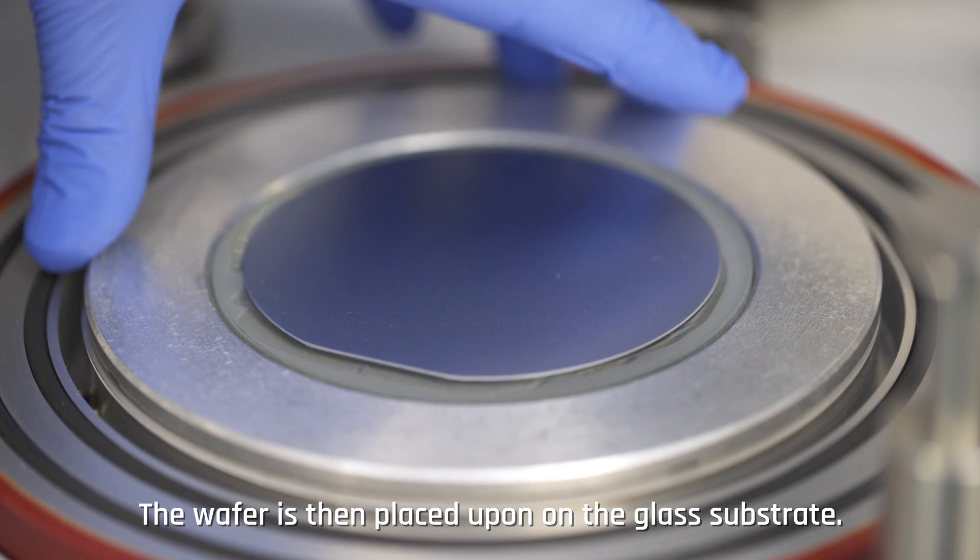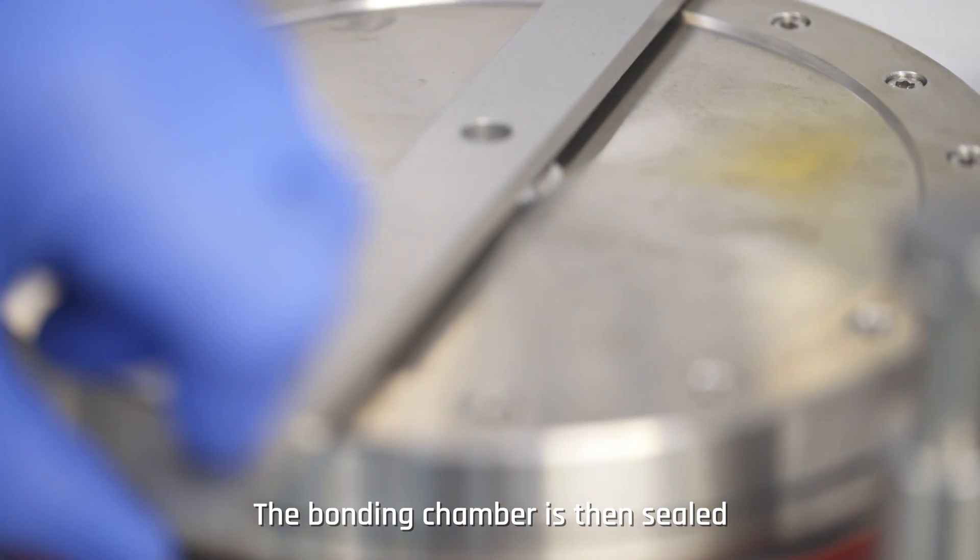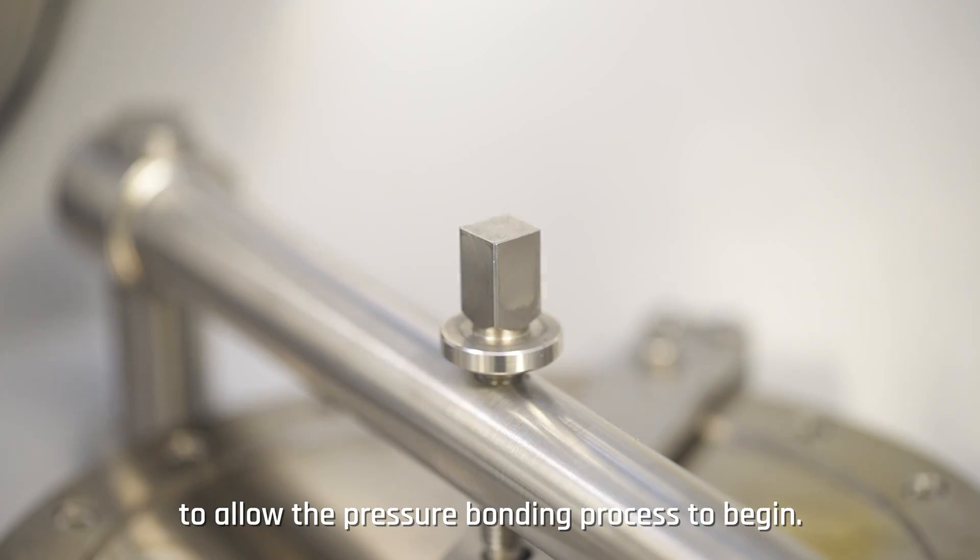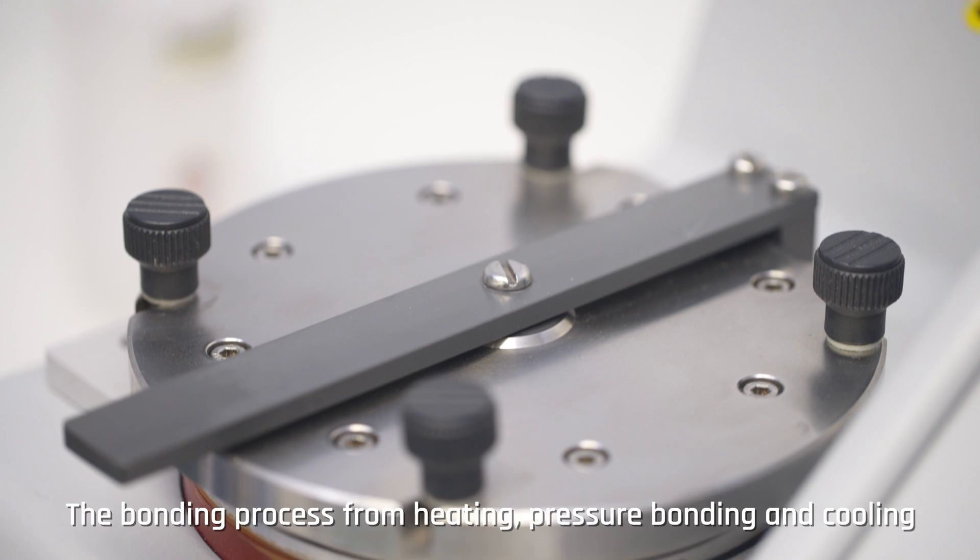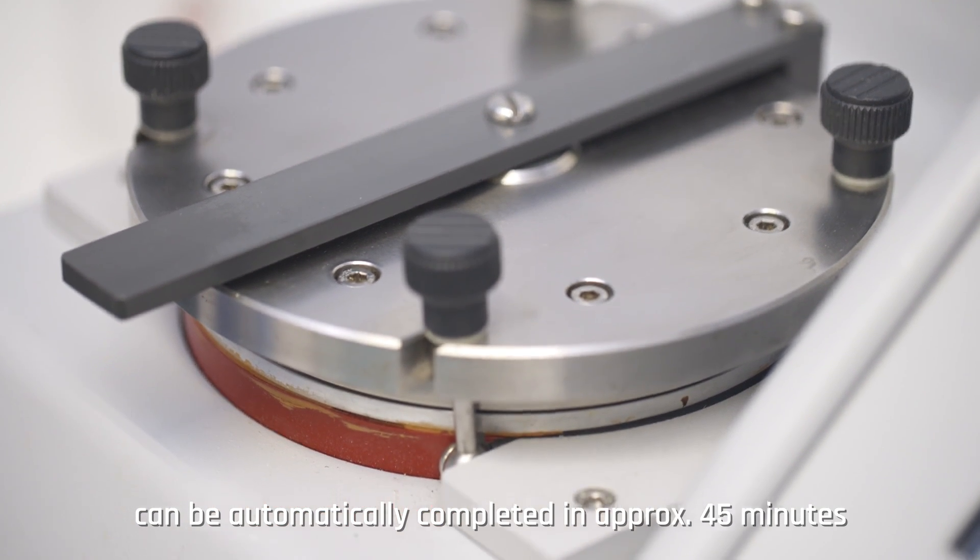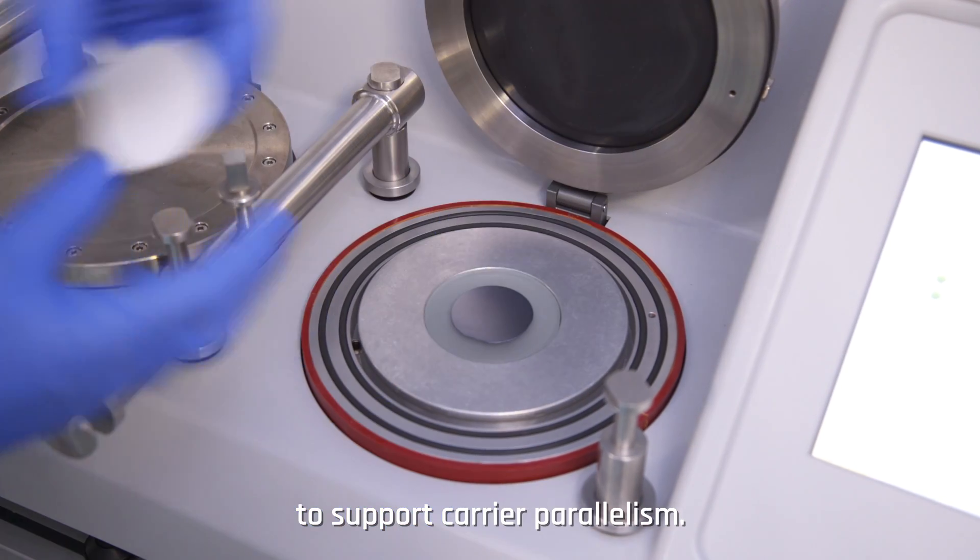The wafer is then placed on the glass substrate. The bonding chamber is then sealed to allow the pressure bonding process to begin. The bonding process from heating, pressure bonding, and cooling can be automatically completed in approximately 45 minutes, providing constant results with a high standard of wafer to support carrier parallelism.